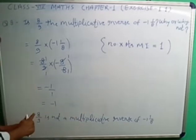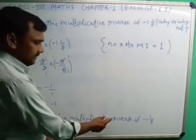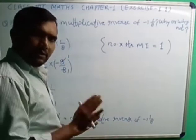So I write here: 8 by 9 is not a multiplicative inverse of minus 1 1 by 8.